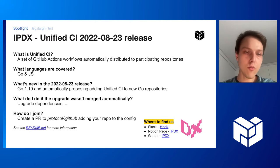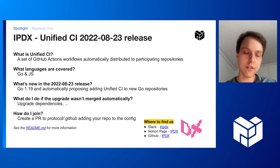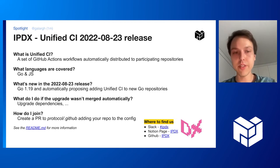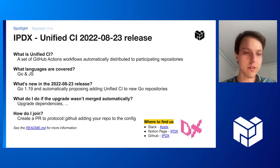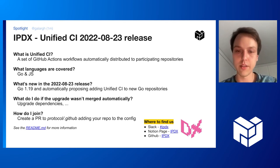Another cool thing new in Unified CI is that from now on, whenever we detect a new repository that uses Go in our organizations, we're going to automatically suggest adding Unified CI there. If you're updating your repository and Unified CI doesn't get merged automatically, it might be for various reasons — most of the time it comes down to upgrading some dependencies. If you're stuck and want some help getting the upgrade through, please reach out to us at IPTX in Filecoin Slack.